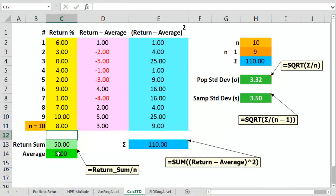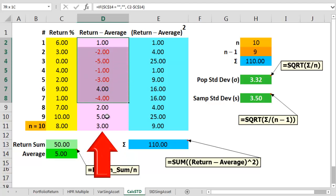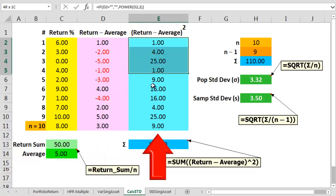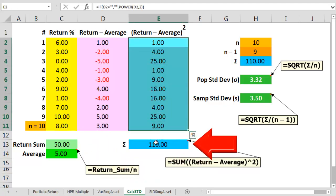Once we've got all the numbers in, we can then find an average return of 5%. Subtract this average from all the actual returns, and then we square those results and add them up into a final sum.